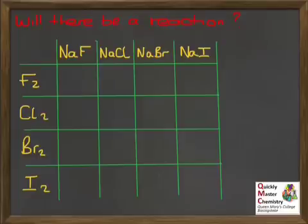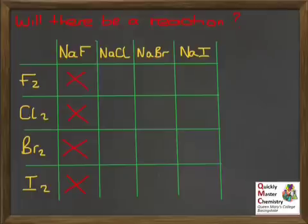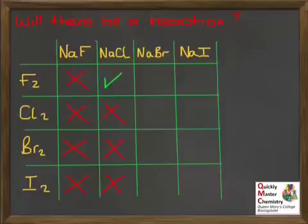For sodium fluoride: fluoride ions will not undergo a redox reaction with any of the halogens, because fluorine is the most oxidising halogen, so nothing — none of the other halogens — can oxidise fluoride ions. For sodium chloride with its chloride ions, there is one possible reaction: fluorine, being more oxidising than chlorine, can oxidise chloride ions — taking an electron away from the chloride ion and giving it to a fluorine atom to make a fluoride ion.